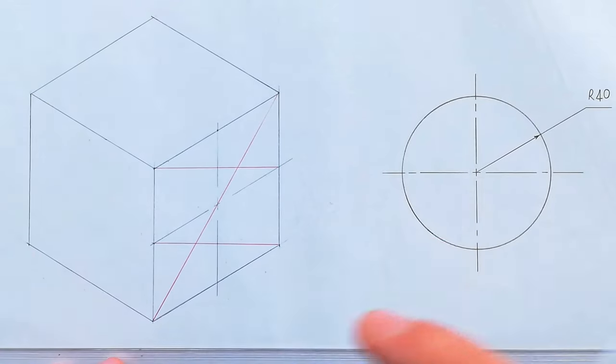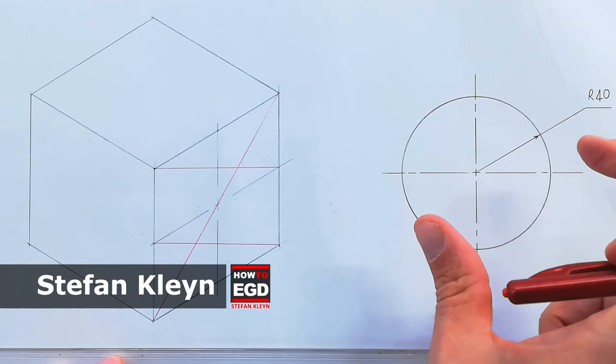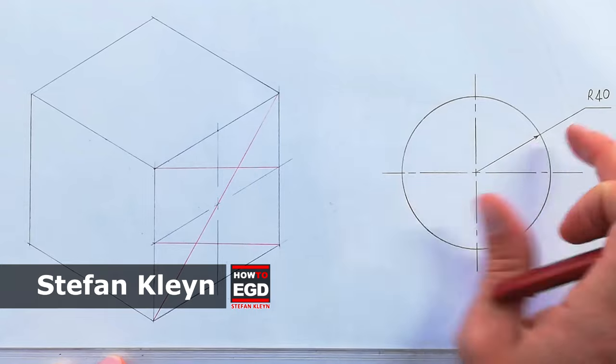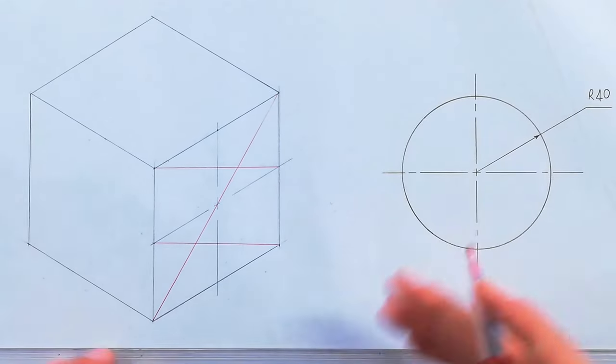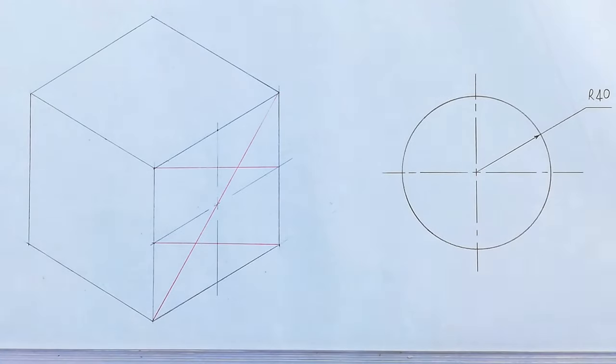Welcome to How to EGD. In this video I'm going to show you how to take this circle, which is a radius 40, and create from it an isometric circle in the most easy way you've ever seen on the internet.